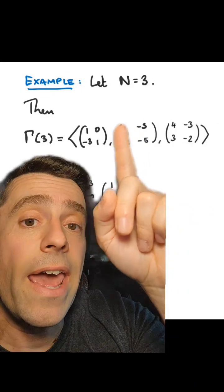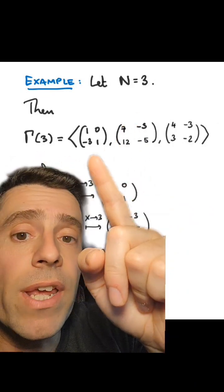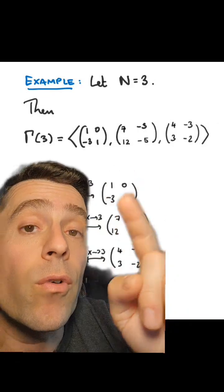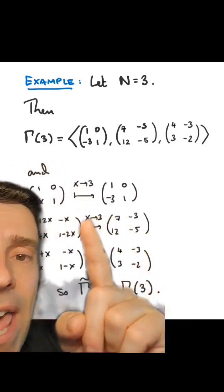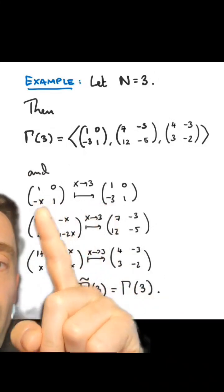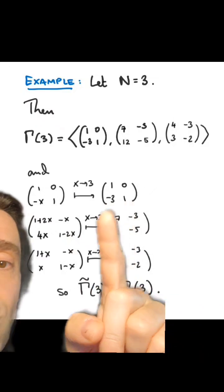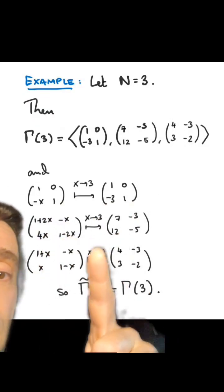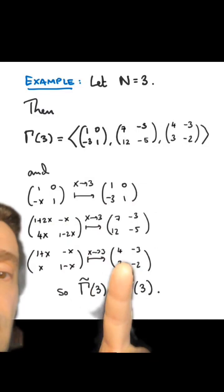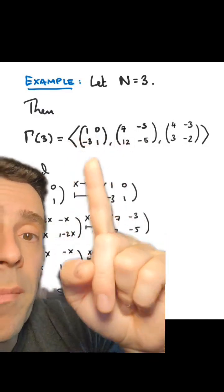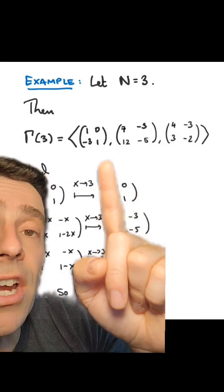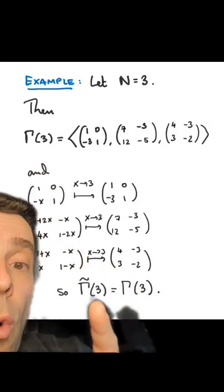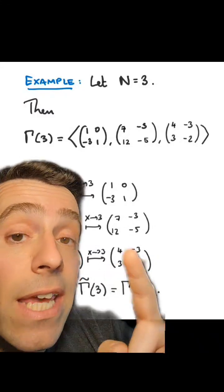For example, let n equal 3. It turns out that gamma(3) is generated as a group by these three matrices. Each one of those three matrices is an evaluation of gamma(x). This matrix comes from this one when evaluated at x equals 3; this one comes from this one at x equals 3; and this one evaluated at x equals 3 gives me this one. That means all matrices in gamma(3) are generated by evaluations of these three matrices in gamma(x), so gamma-tilde of 3 equals gamma(3).